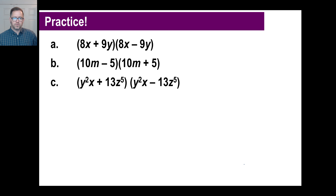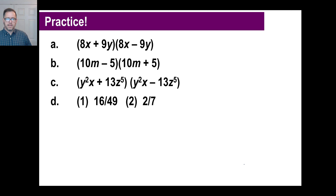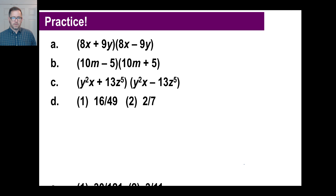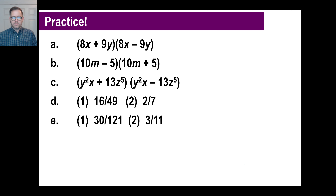For D: the probability of the first possibility is 16 out of 49, and the second is 2 out of 7. For E: the first answer is 30 out of 121 because we're replacing, and the second probability reduces to 3 out of 11. Hope you guys had fun — see you next time!